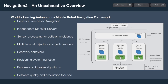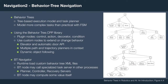The key behind Navigation 2 different from ROS1 is behavior tree based navigation. Behavior trees are a tree-based execution model able to model far more complex tasks than practical with finite state machines. We use the BehaviorTree.cpp library, which enables plugin-based control, action, decorator, and condition nodes in our trees. We can extend those custom nodes or change the behavior of a navigation task by changing the XML files used for navigation, including extensions like elevator and automatic door APIs.